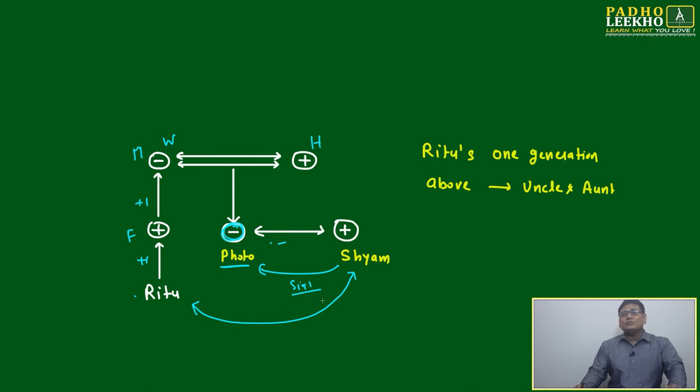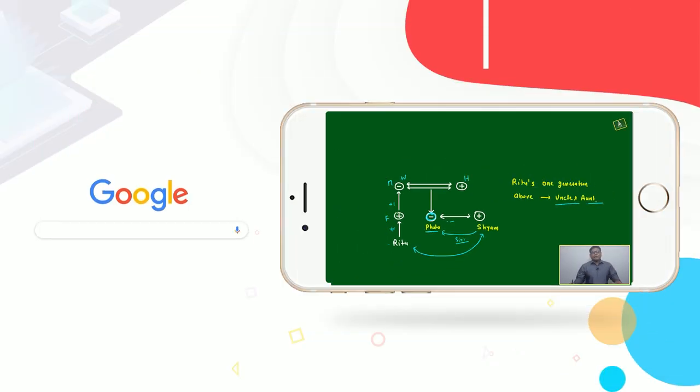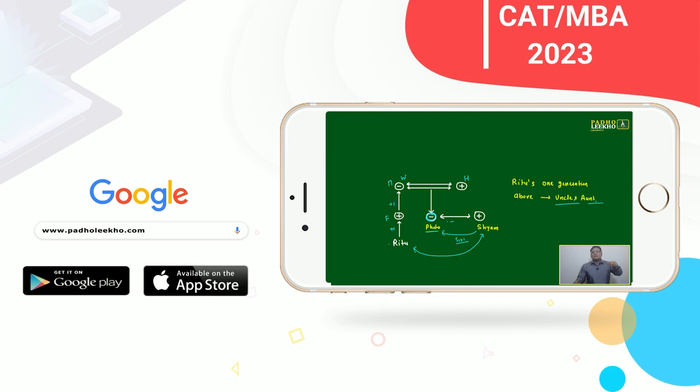If one generation of gap, if you are not getting any relation, what we will do? Uncle and aunt. Any relation in English: one generation gap - uncle and aunt; one generation below down - nephew and niece; same generation - brother and sister.